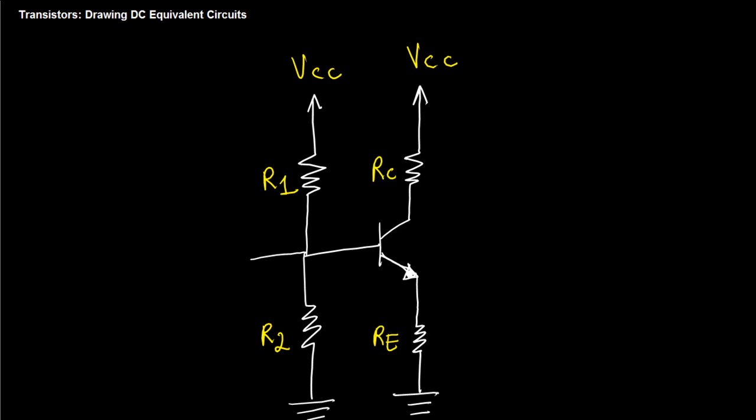The DC equivalent is used to find your Q point. Once you get to this part, you can go ahead and do all the circuit analysis required to find your IC and your VCE.